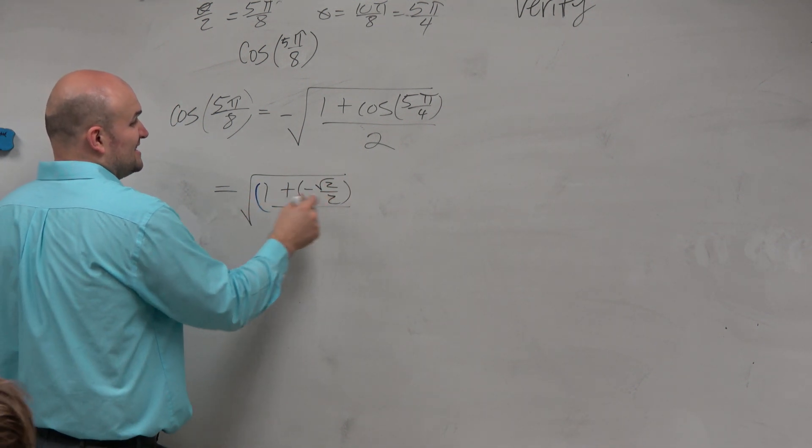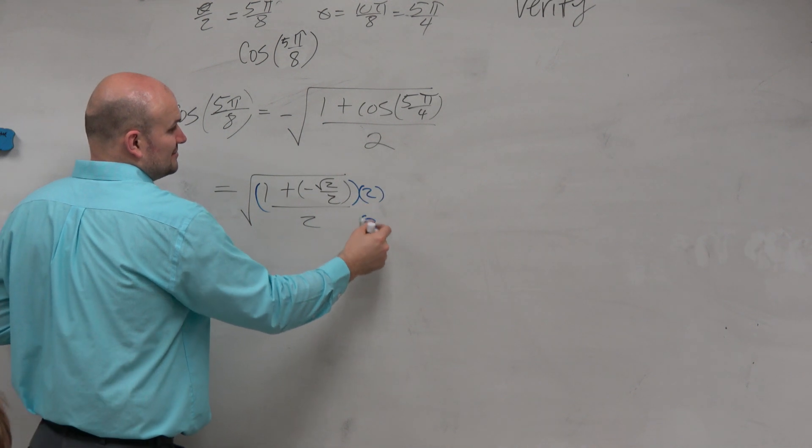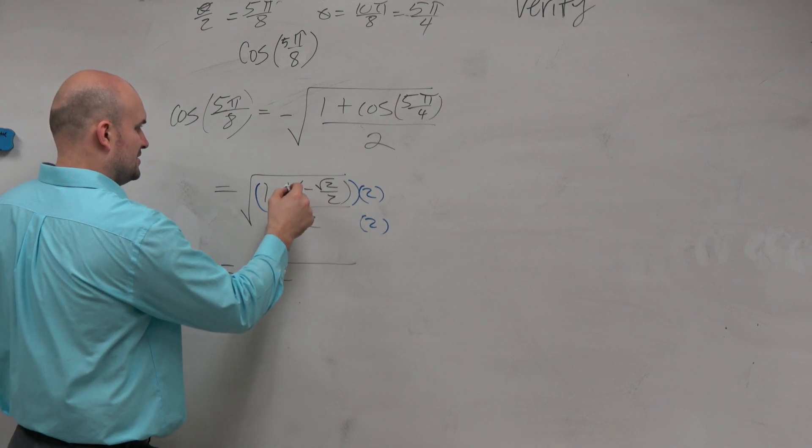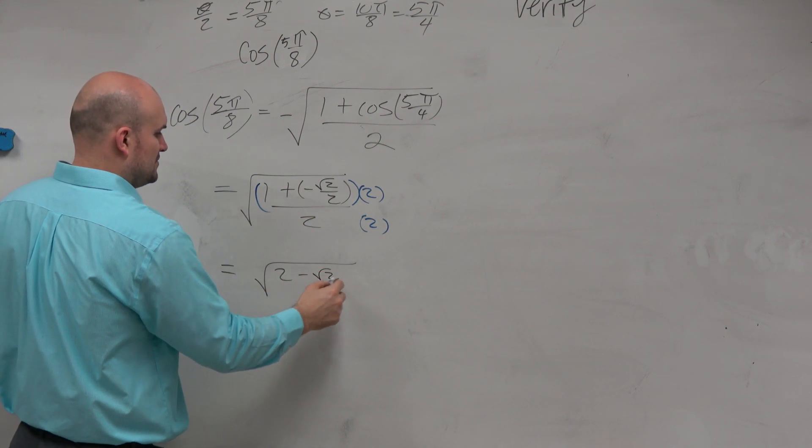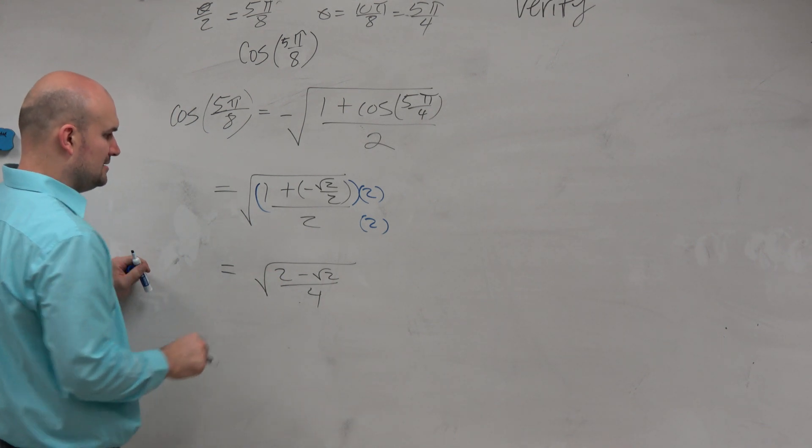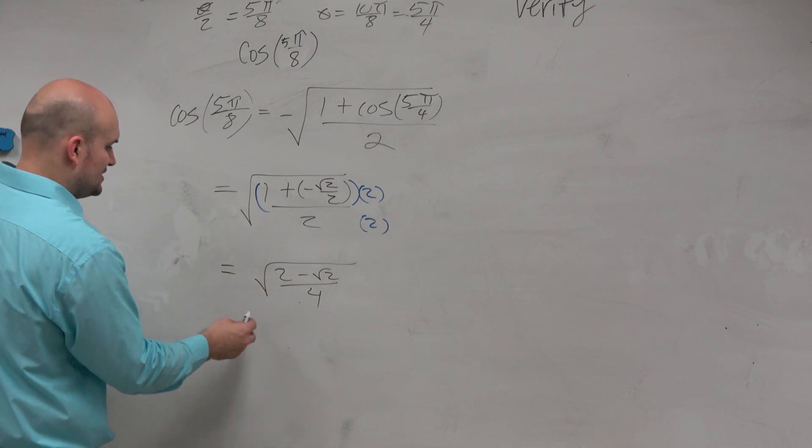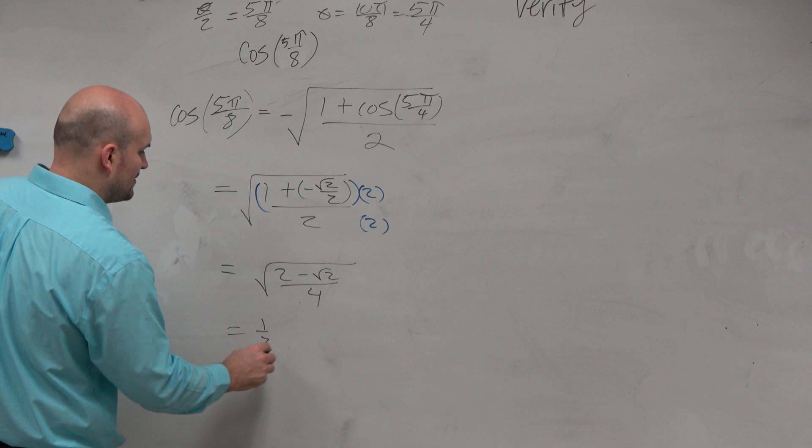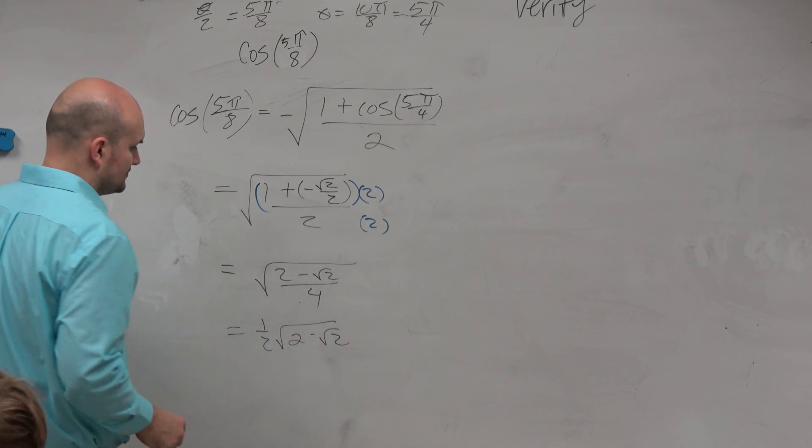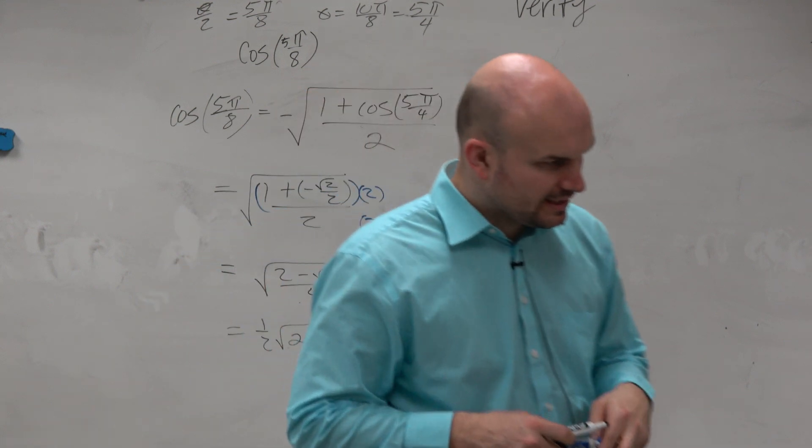Again, you guys can see it's kind of the same process over and over again. That goes to a negative. Those divide out. Square root of 2 over 4. We can break that up and just rewrite that. Since I already did this once, we can rewrite that as a 2 in front. And then you guys can go from there.